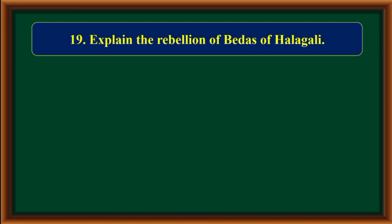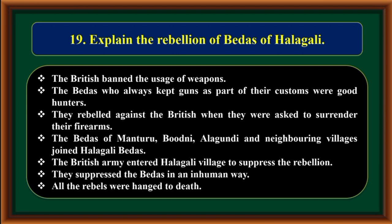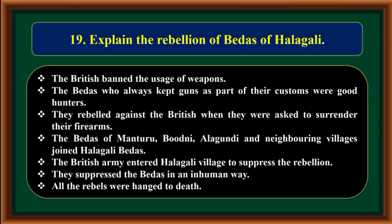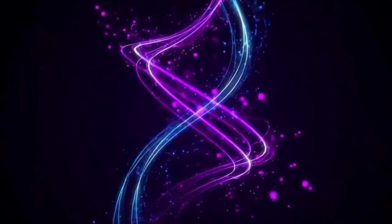Explain the rebellion of Bedas of Halagali. The British banned the use of weapons. The Bedas, who always kept guns as part of their customs and were good hunters, rebelled against the British when asked to surrender their firearms. The Bedas of Manturu, Bodni, Alagundi and neighboring villages joined the Halagali Bedas. The British army entered Halagali village to suppress the rebellion. They suppressed the Bedas in an inhuman way, and all the rebels were hanged to death.